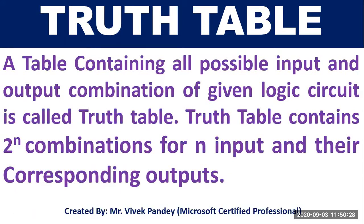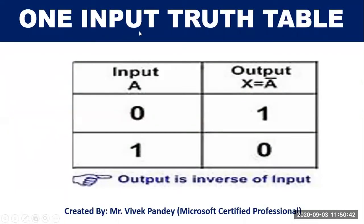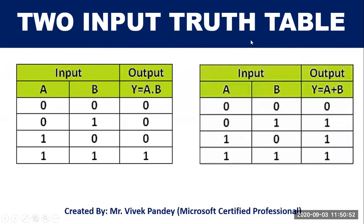A table containing all possible input and output combinations of a given logic circuit is called a truth table. It contains two to the power n combinations for n inputs and their corresponding outputs. Here is an example of a one-input truth table, and this is the example of a two-input truth table.